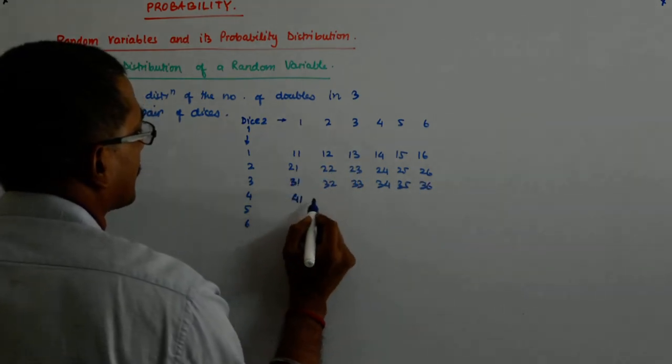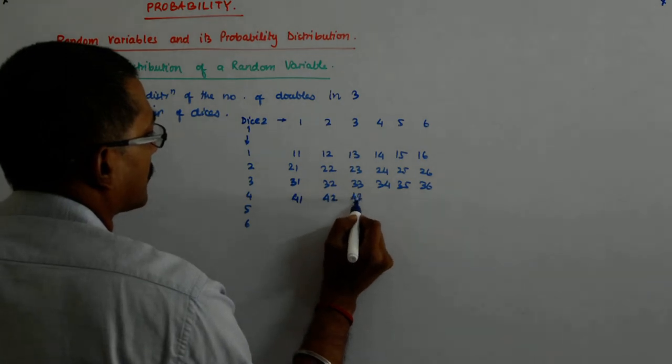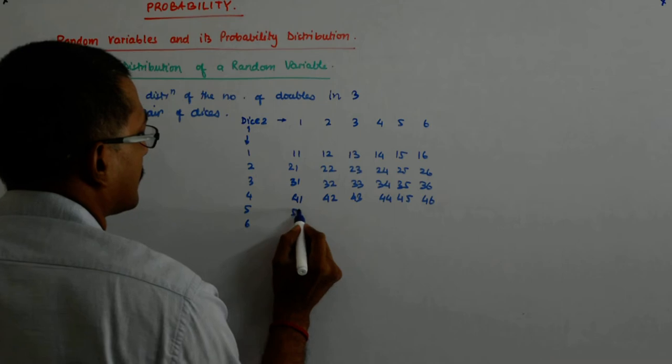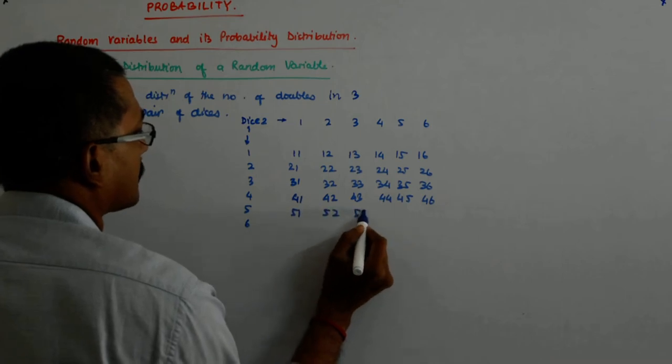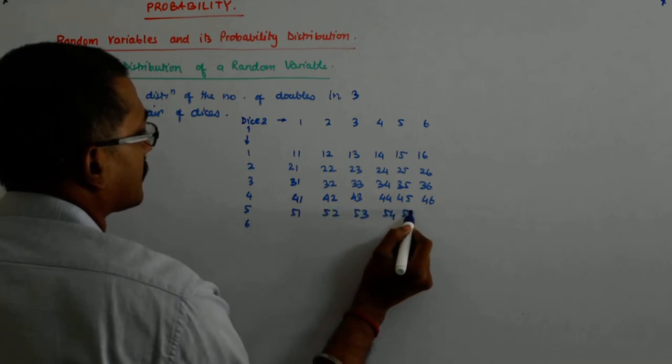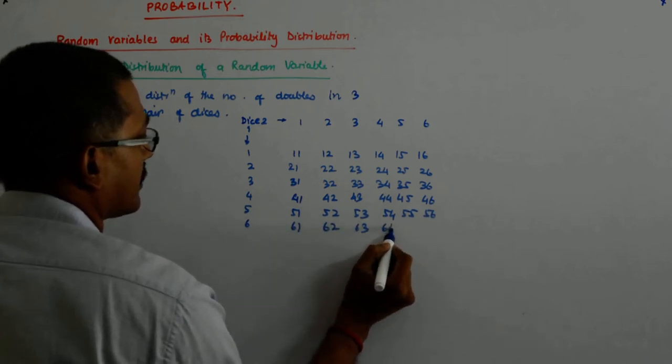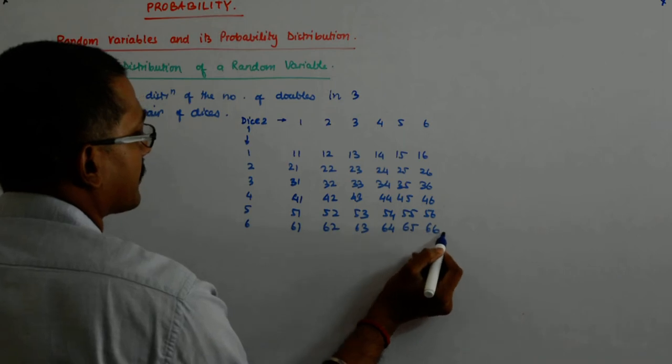Four-one, four-two, four-three, four-four, four-five, four-six. Five-one, five-two, five-three, five-four, five-five, five-six. Six-one, six-two, six-three, six-four, six-five, six-six.